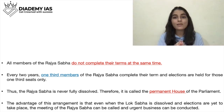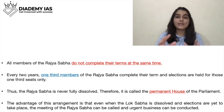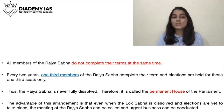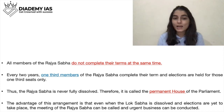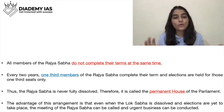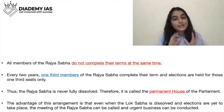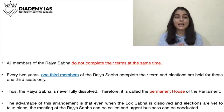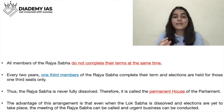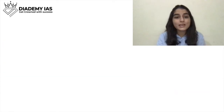The advantage of this arrangement is that even when the Lok Sabha is dissolved and elections are yet to take place, the meeting of the Rajya Sabha can be called and urgent business can be conducted. If BJP loses its majority in Lok Sabha, the PM and Council of Ministers will have to resign, but Rajya Sabha is always there to handle any urgent business.